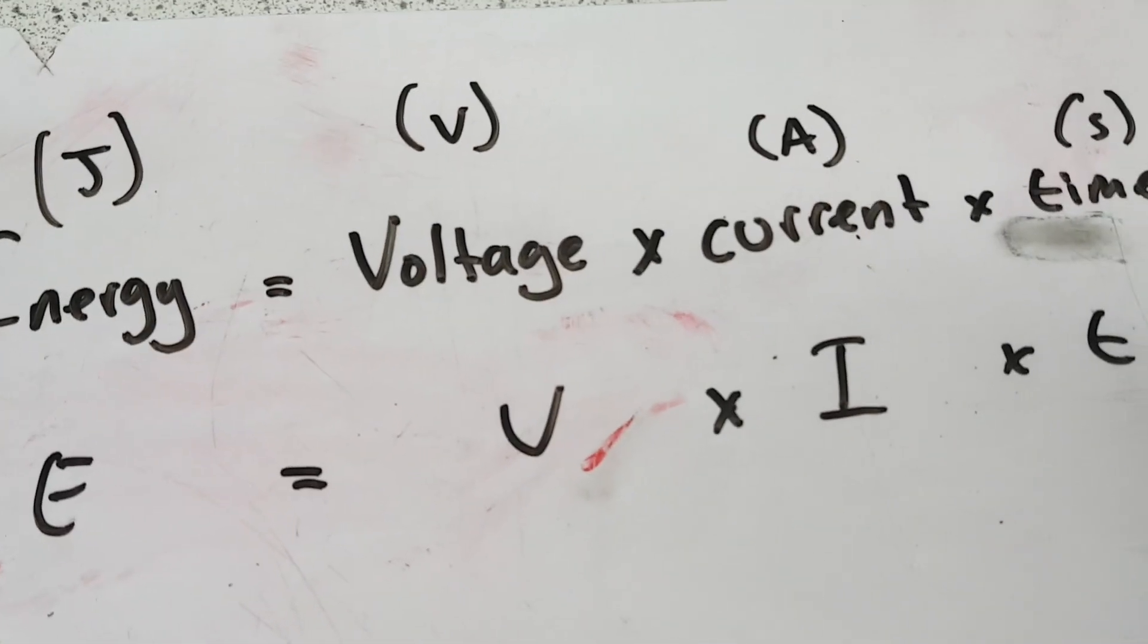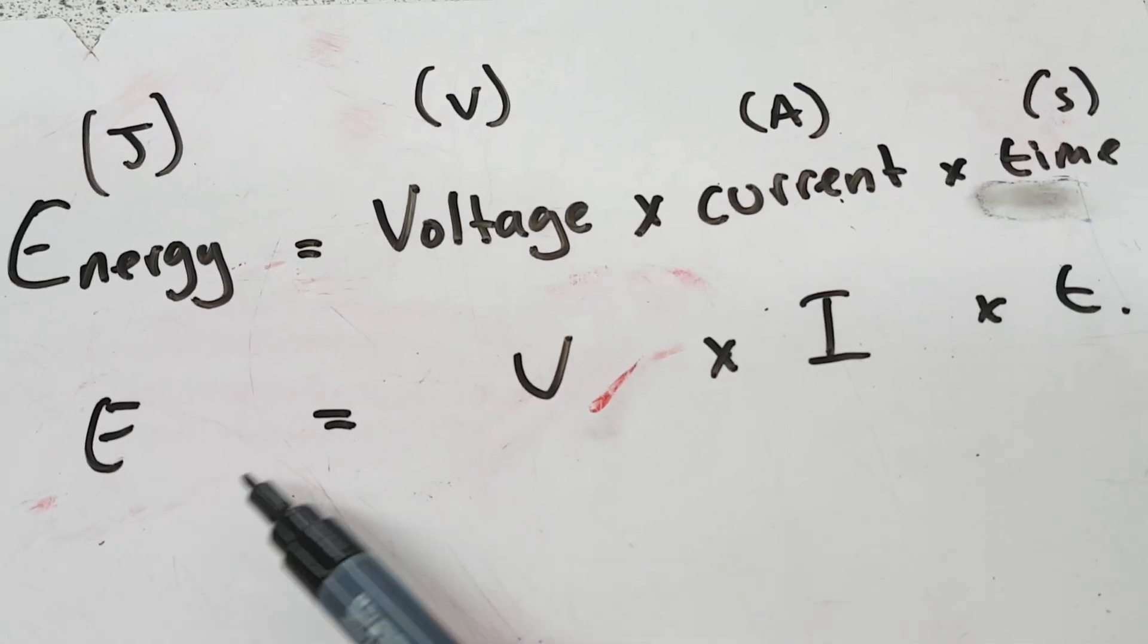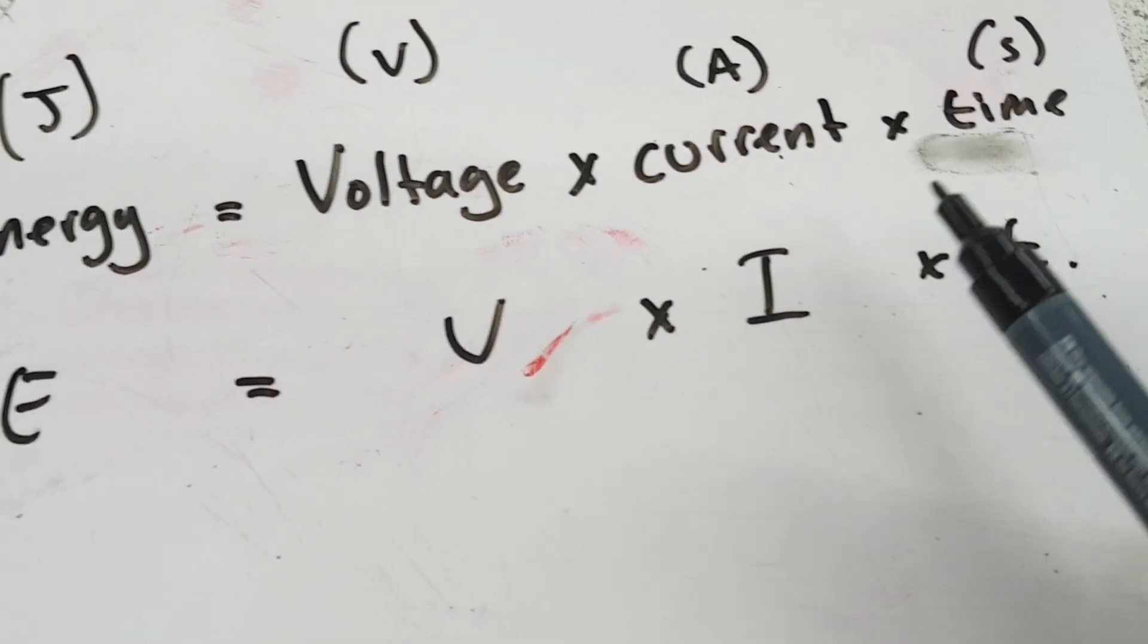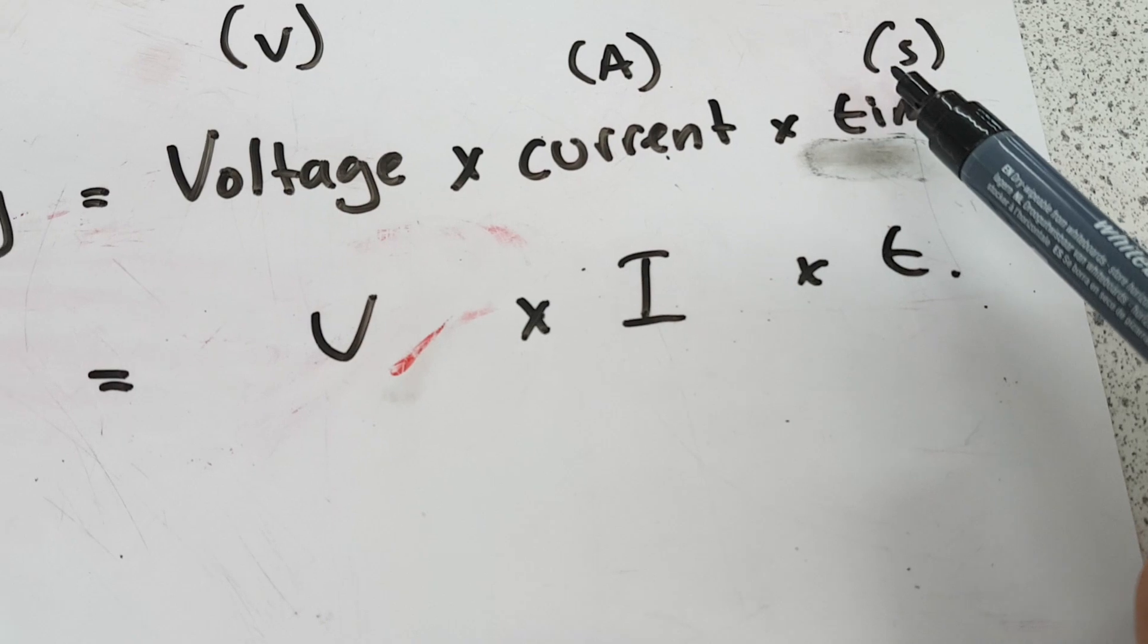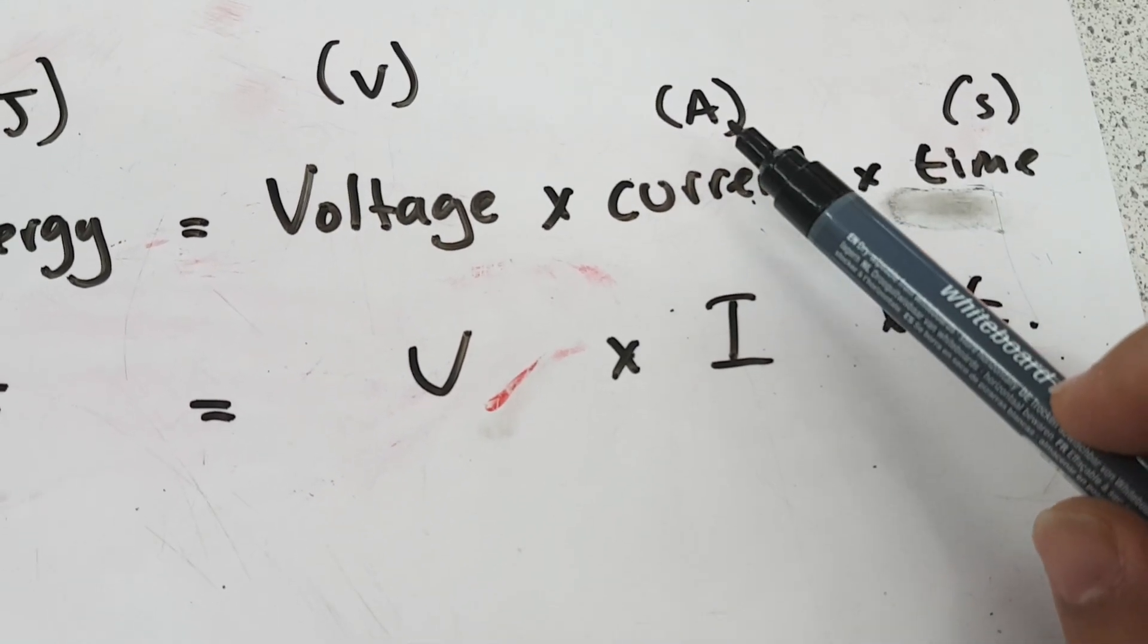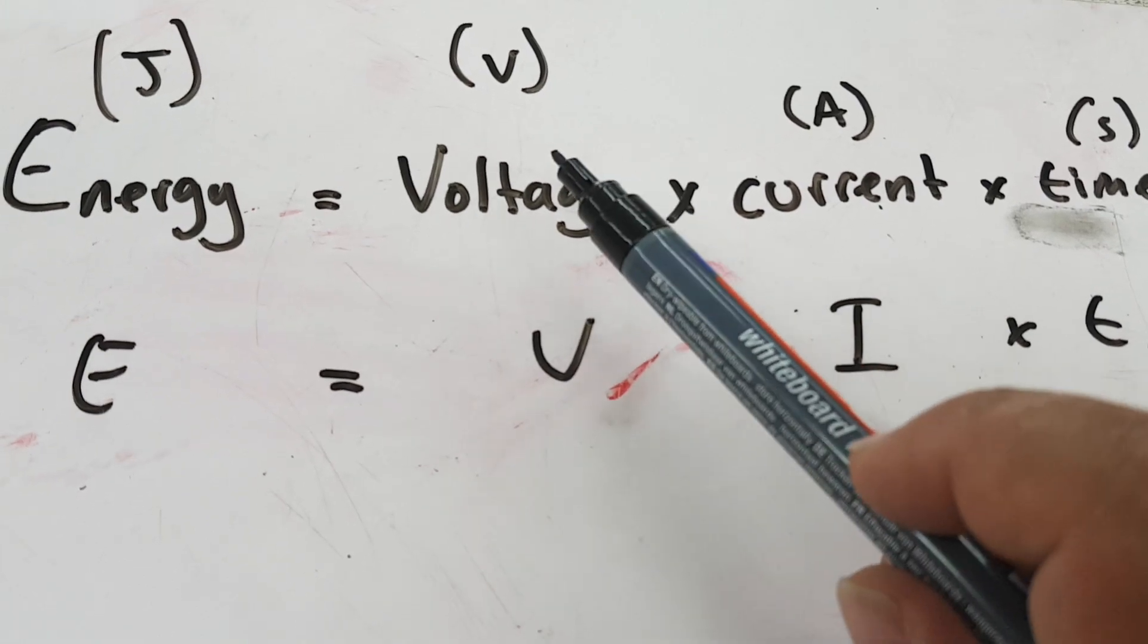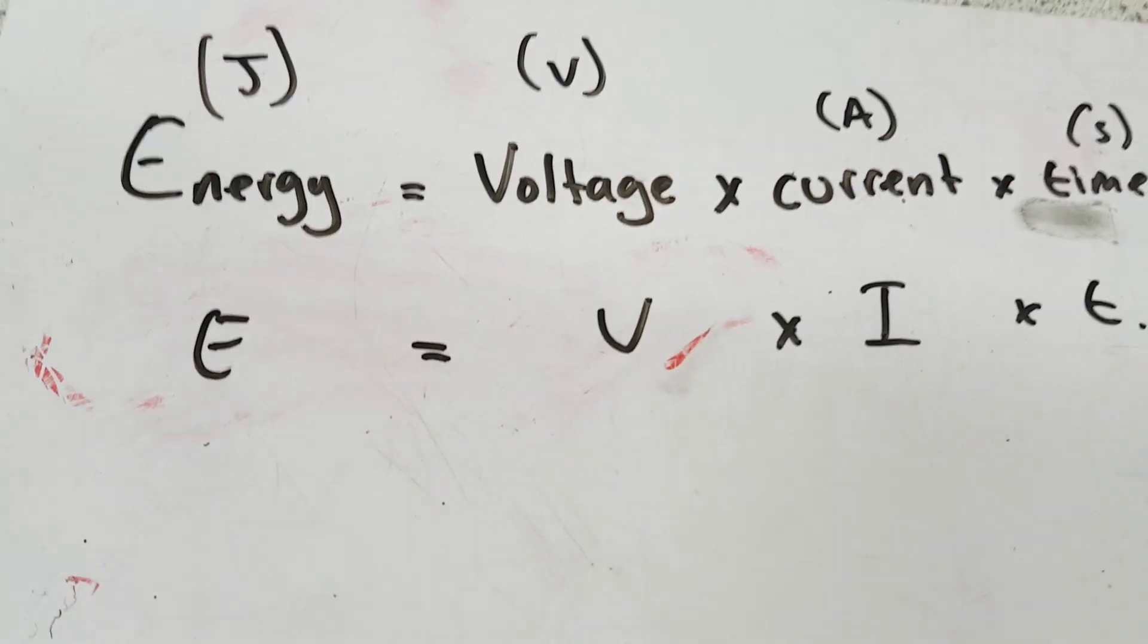So how do we do that? We do that using another equation, which is energy is equal to voltage times current times time. So E equals V times I, which is current, times time. But the time needs to be in seconds. So that's really important. Current is measured in amps. We get that from the ammeter. And voltage is measured in volts. And energy, all energy is measured in joules.